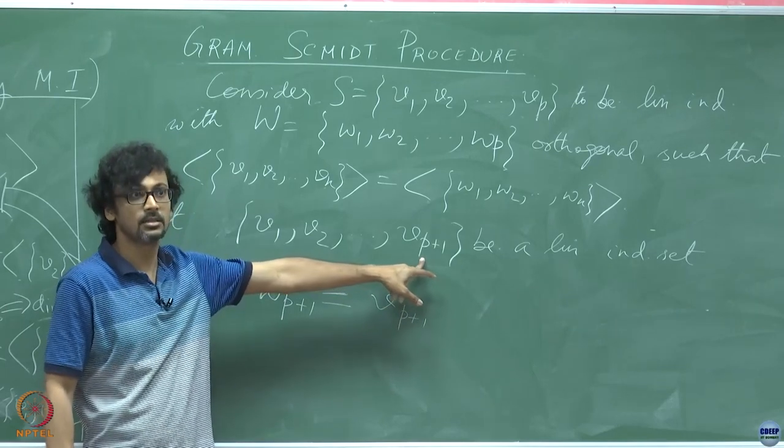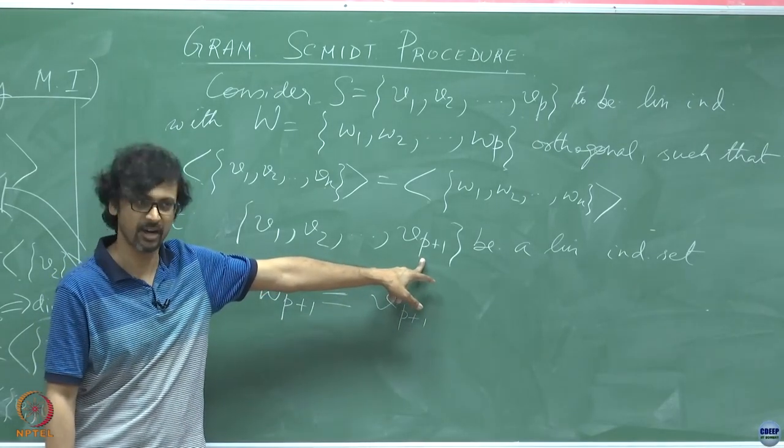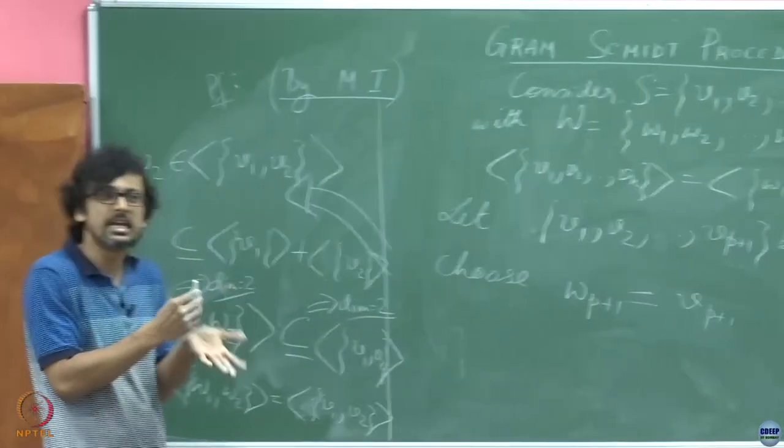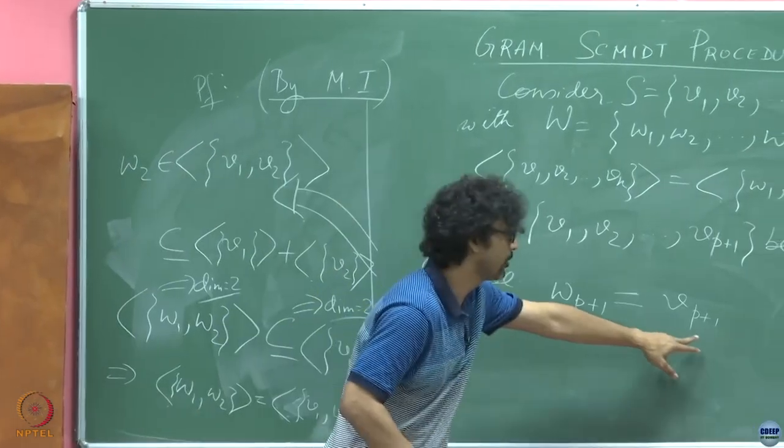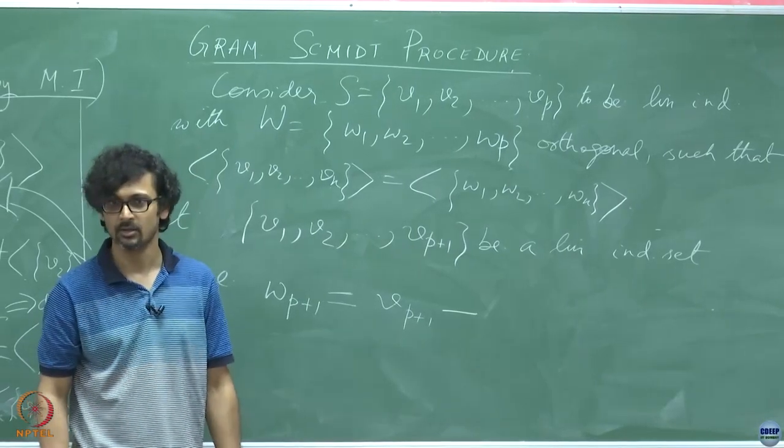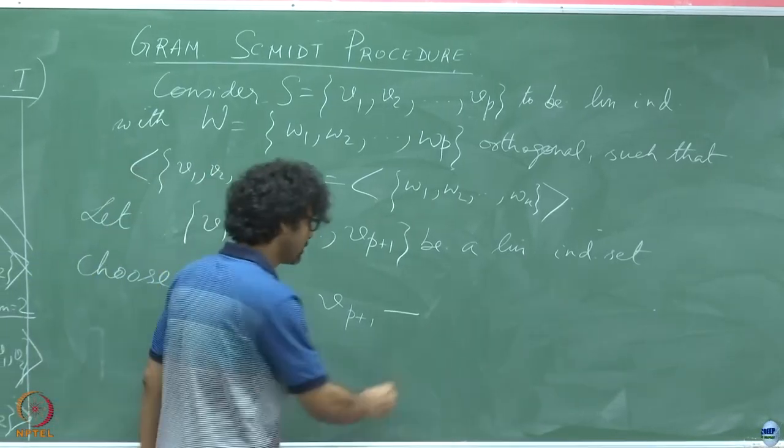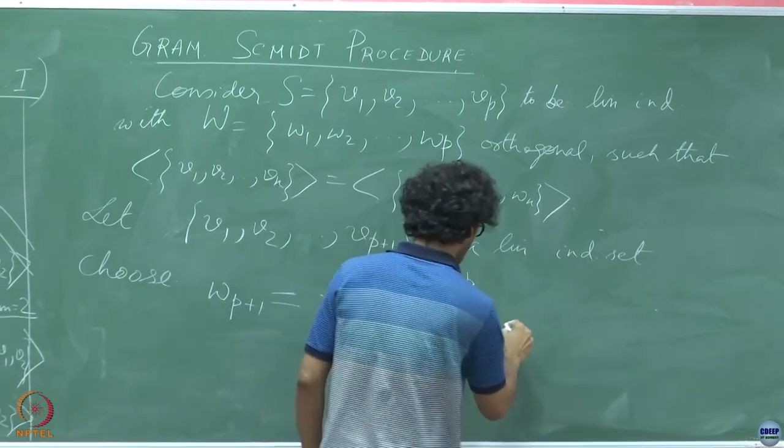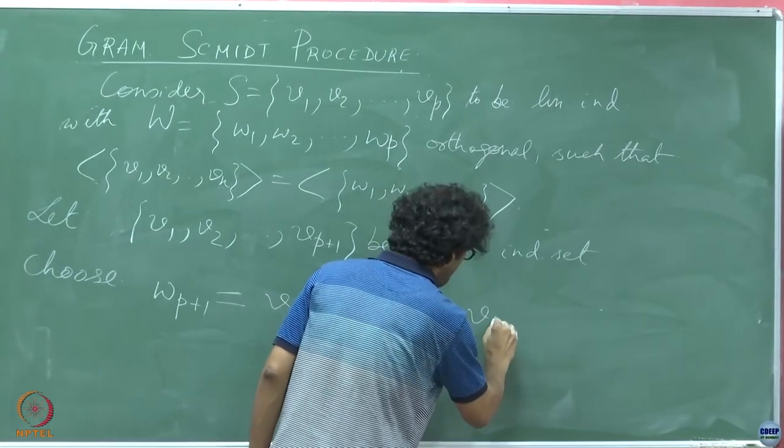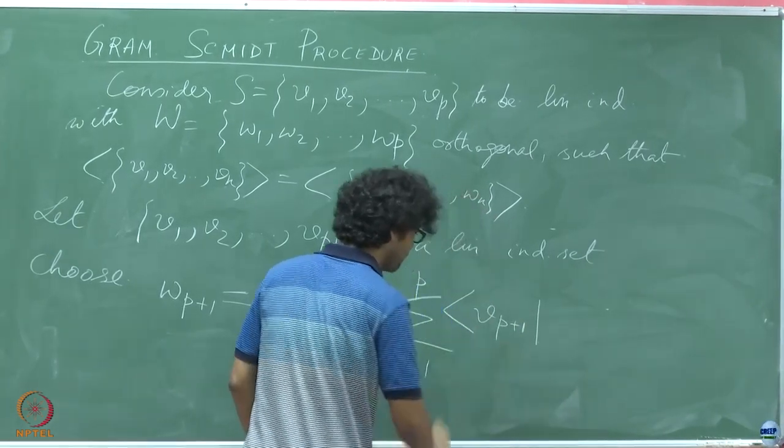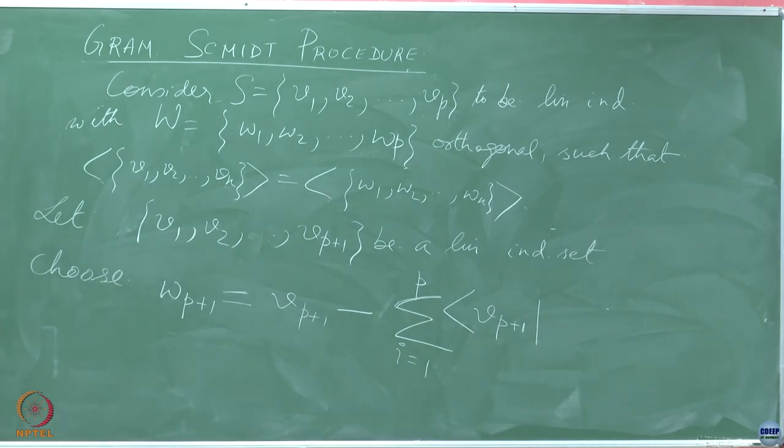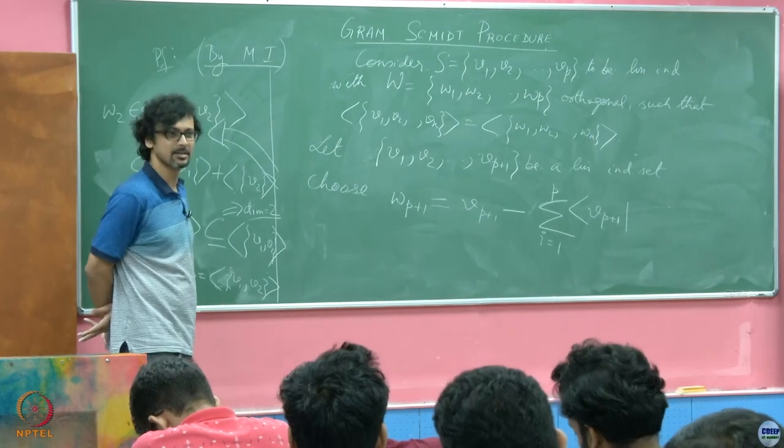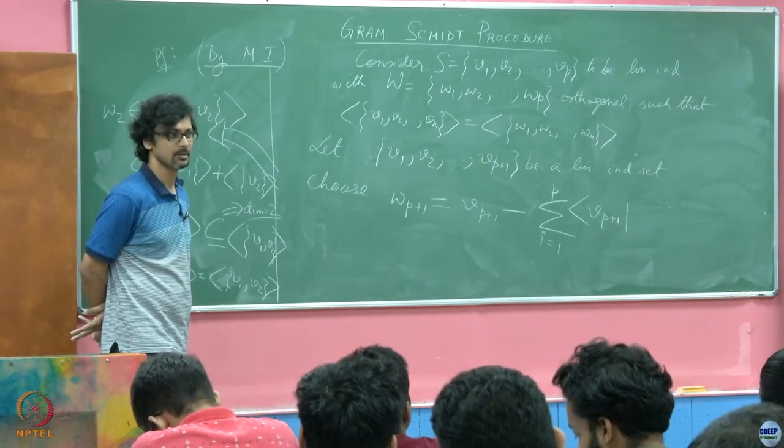What new qualities is this fellow bringing to the table in a philosophical manner of speaking? Clearly, if this fellow is expanding this set while preserving linear independence, it is bringing something fresh in purely philosophical terms. So we better take out what is common and only retain what is unique to this fellow in some sense. So this is the fellow in its entirety, from it we subtract whatever is nothing new to this already, which is summation i going from 1 through P. What is it, V P plus 1 inner product with, what is it?